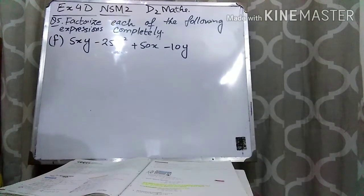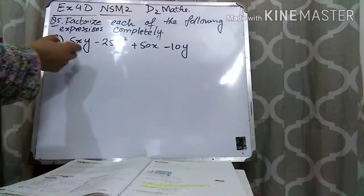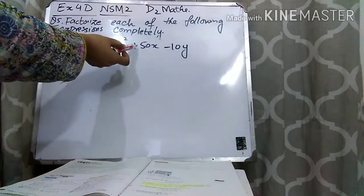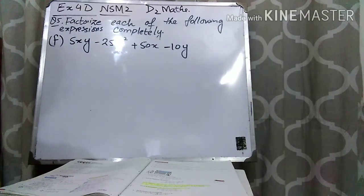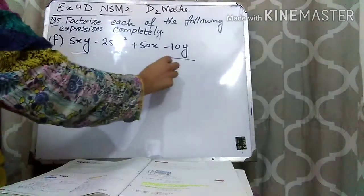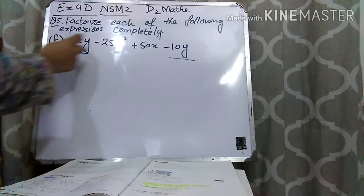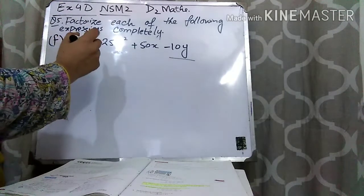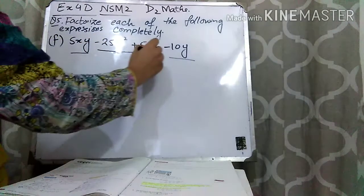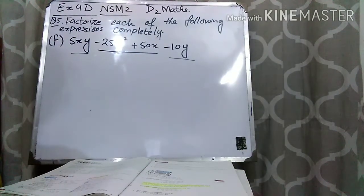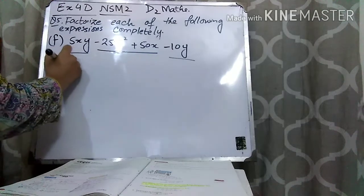Let's come to part F. In this question you can see that the expression is 5xy minus 25xk plus 50x minus 10y. In the very first step you have to think about how you can make the brackets the same. If you write the first and last term together, 5 and y are common. If you take 5y common you will get x minus 2. In the same way, taking 25x common from the middle terms gives the same bracket.